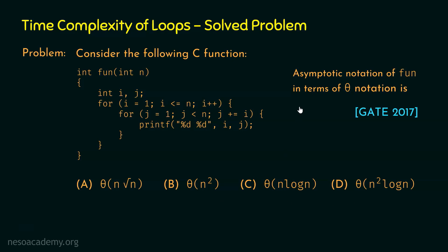In the question, we have been asked to find the asymptotic notation of fun in terms of theta notation. This means our job is to determine the time complexity of this function fun in terms of theta notation. The time complexities are given in terms of theta notation in these options. Let's try to find which of these options is the correct option.